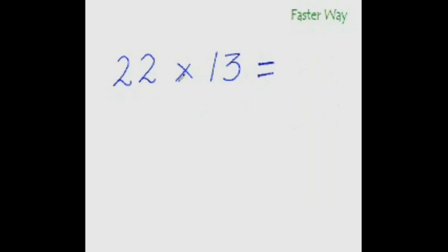What is 22 times 13? Since this is more than 19, we actually have to find the distance from the base 10. 13 is plus 3 more than the base and 22 is plus 12 more than the base. Now in a cross fashion, add this 3 to 22. So 22 plus 3 is 25.